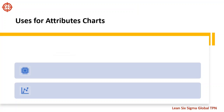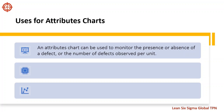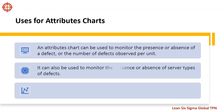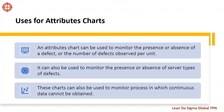We use attribute charts when we evaluate quality characteristics such as customer satisfaction or the defectiveness of a manufactured item. We might be interested in the presence or absence of a defect, the number of total defects observed on an item, or monitoring for the presence or absence of several types of defects. Attribute charts allow us to monitor processes where continuous data cannot be physically, visibly, or economically obtained.